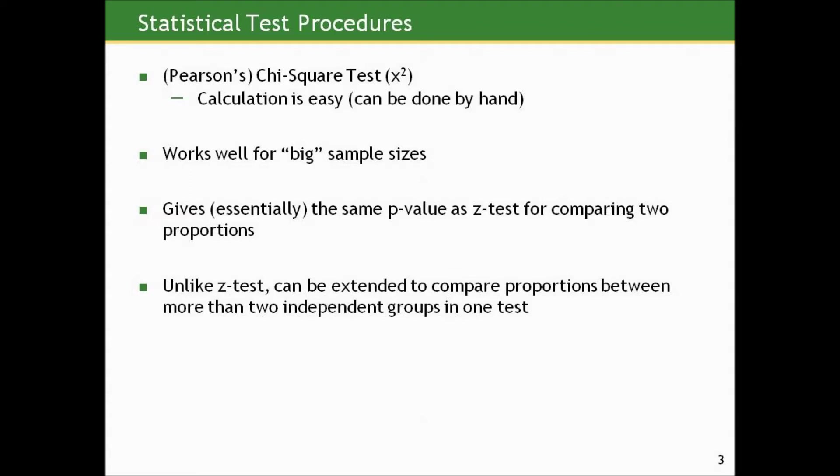Unlike the z-test, so why do we even talk about the chi-square? Well, unlike the z-test, it can be extended to compare proportions between more than two independent groups in one test, sort of the analog to analysis of variance, but when we're dealing with binary outcomes.